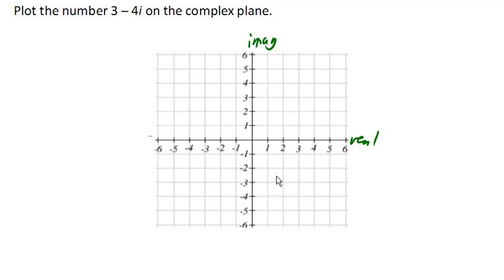So 3 minus 4i... 3 is the real portion of this number, and the minus 4i is the imaginary part. And so we would put a dot on the complex plane. That is 3 in the real direction, horizontal,